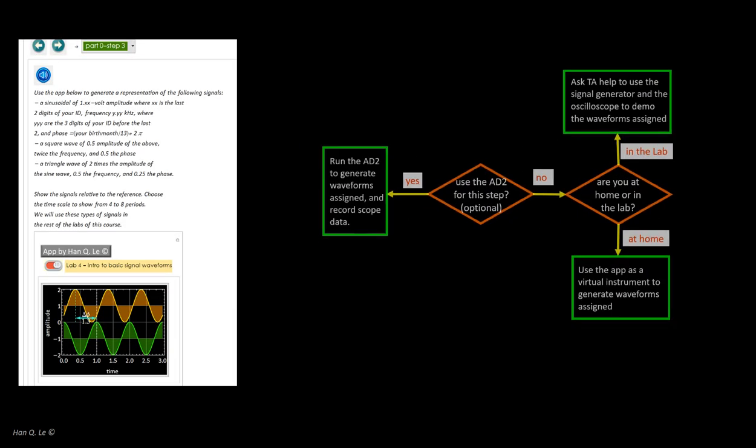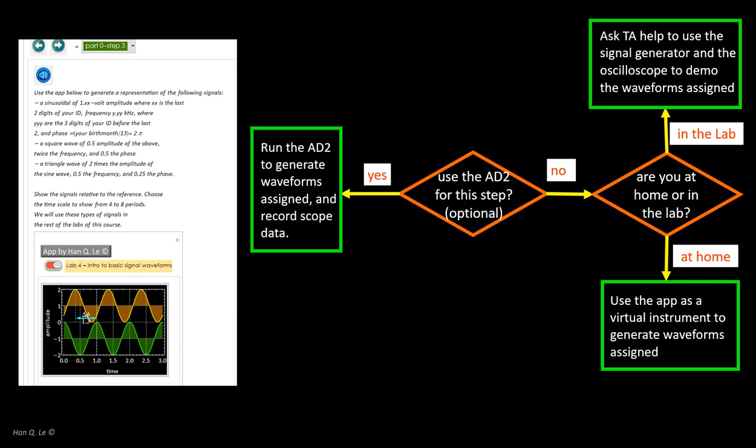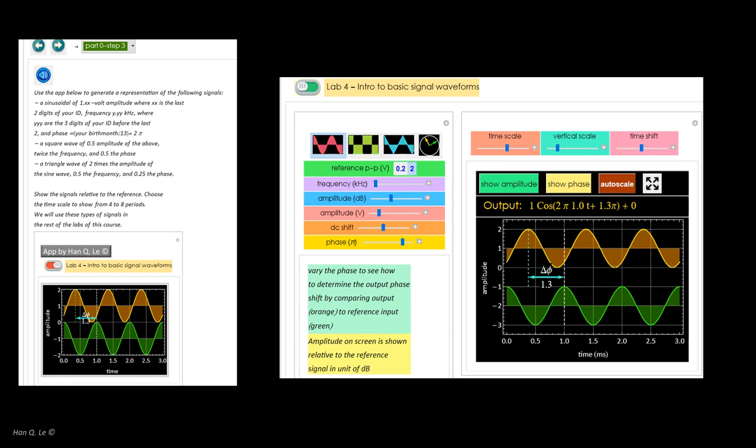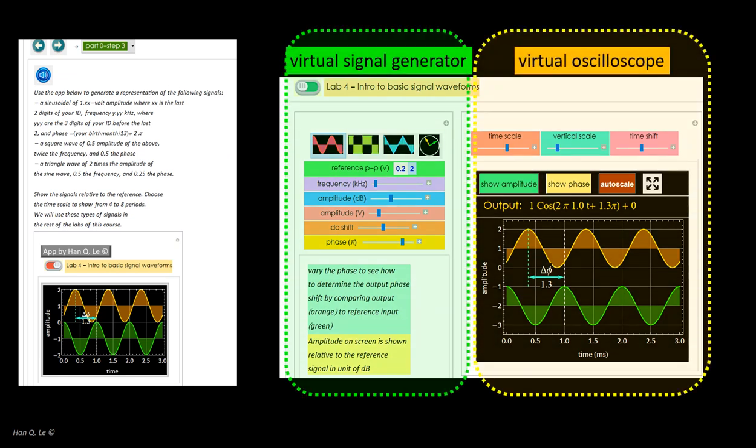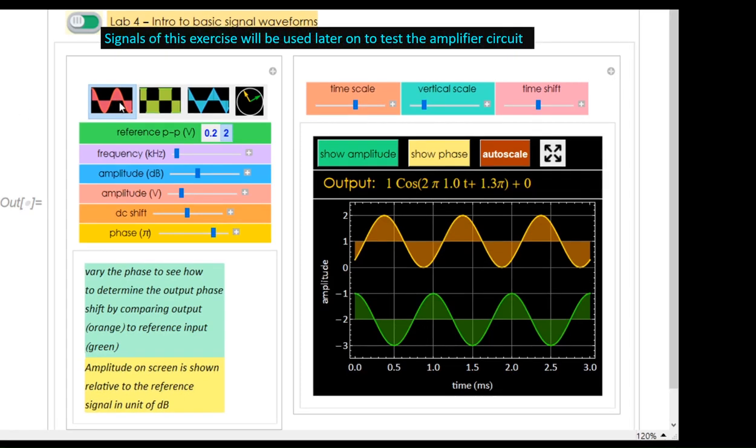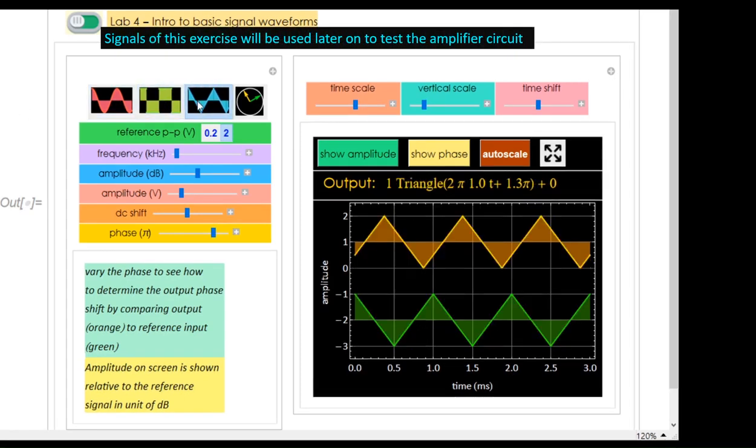This exercise involves generating common waveforms to be used later for experiments. If you are interested in hands-on work, you can use the AD2 or the instruments in the lab. This will be done again later with real measurements of the circuits. Hence, it is fine if you wish to do virtual instrumentation in this step for a concept review. Waveform buttons. The last one is sinusoidal, but plotted in the complex plane.